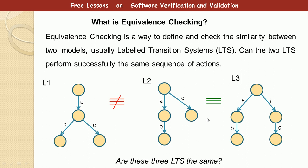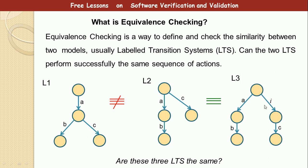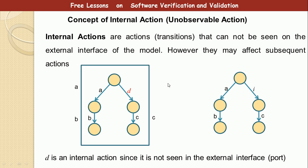Before that, let's look at the concept of internal or unobservable actions. If we look at the previous slide, you see this 'i' here — it means internal action. The question is: what is an internal action? Internal actions are transitions between two states that cannot be seen on the external interface of the model; however, they may affect subsequent actions. Inside the model we have a, b, and d, c — but on the external interface, we don't have d, so it's hidden. That is called an internal action.